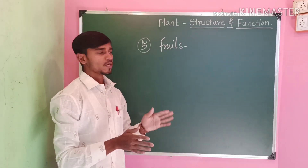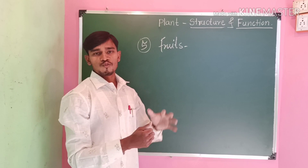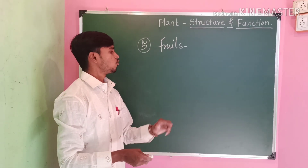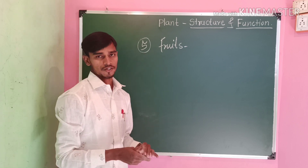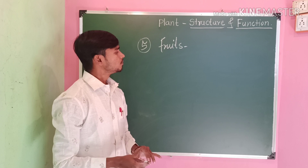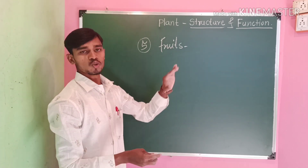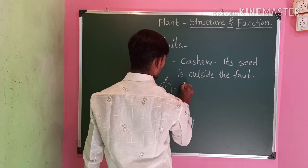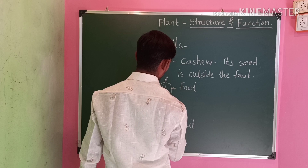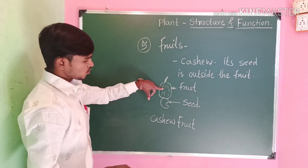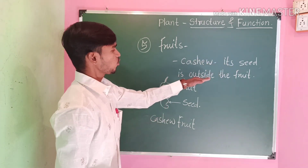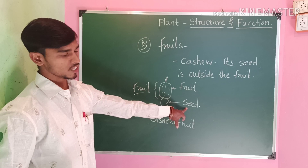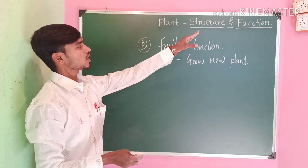Fruits. We eat many different types of fruits, each with its own different characteristics. Mango contains only one seed, whereas a jackfruit contains many seeds. Seeds can be divided into two parts in dicot plants, but in monocot plants, seeds are not divided into two parts. In a cashew fruit, the seed is outside the fruit. In this way, we learn about plant structure and their functions.